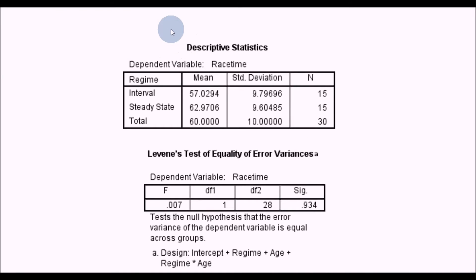Looking at the mean scores first: these are race times in minutes. The interval group had a mean race time of around 57 minutes. The steady state group recorded a mean race time of 62.97, just under 63 minutes. So it looks like there's a difference there, and we need to test whether that difference is significant after controlling for age.